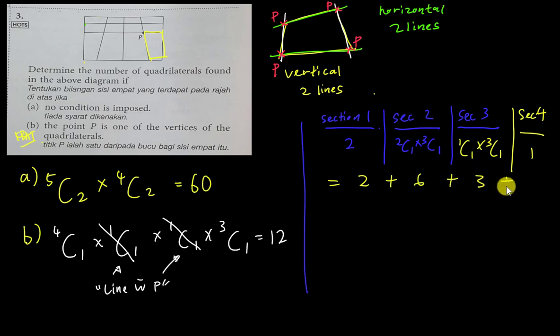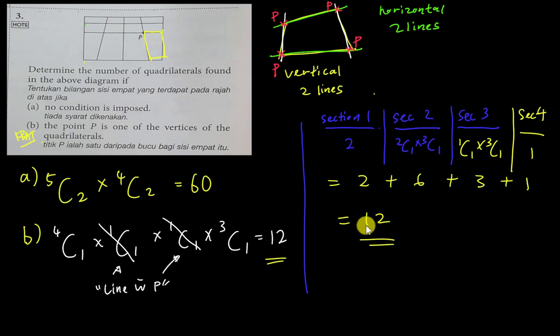Adding them all up: 2 plus 6 plus 3 plus 1 equals 12, confirming the same answer. You can use any method — the fast way or counting section by section — to get 12. This is a good question for students to think about how to find the total possibilities of forming a quadrilateral. I hope you find this video helpful. See you in the next video!